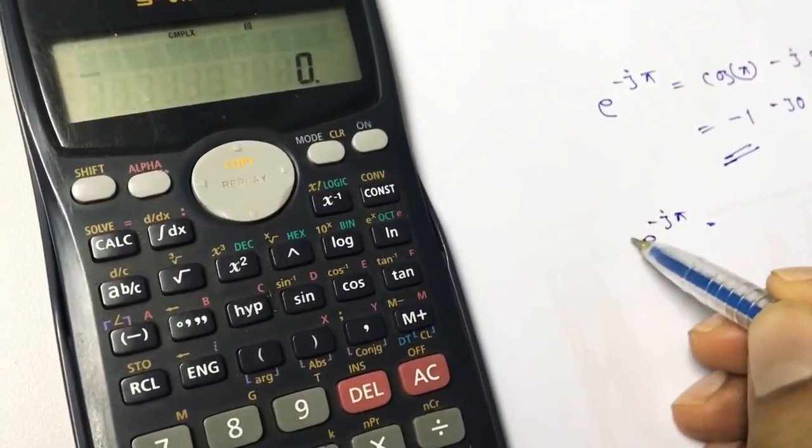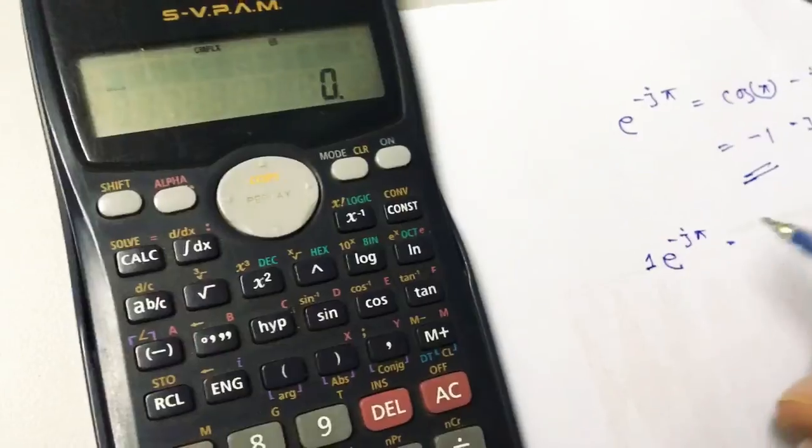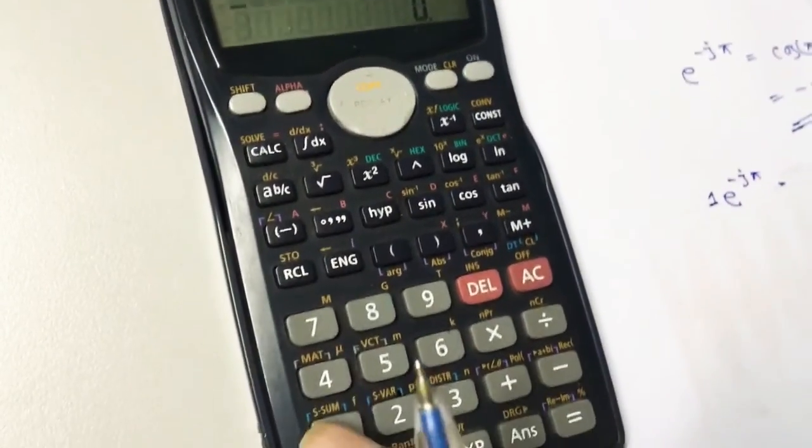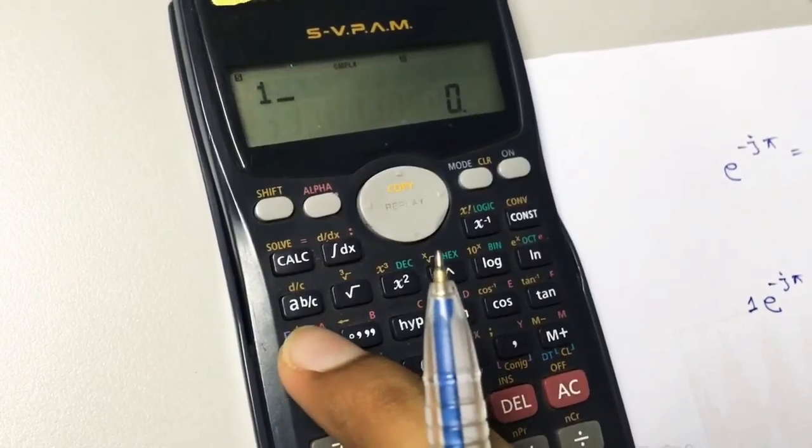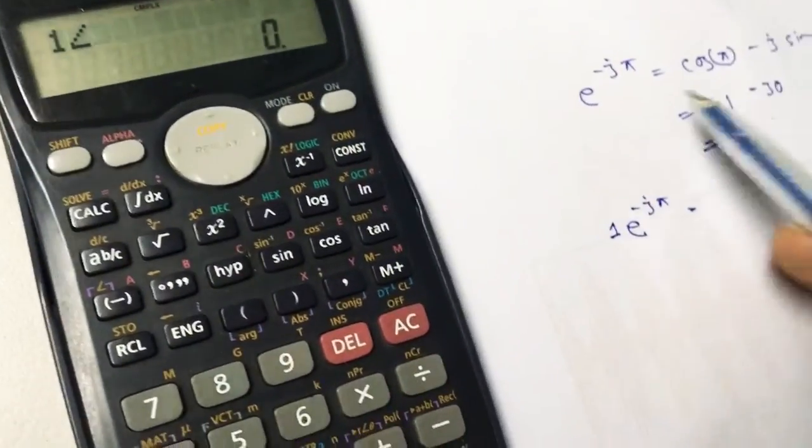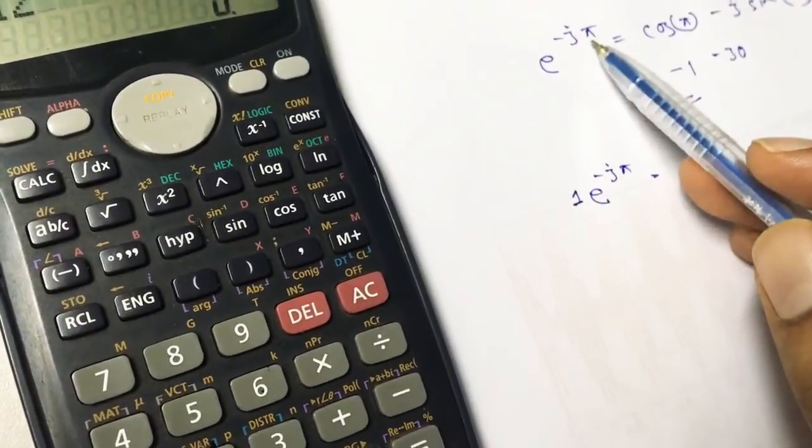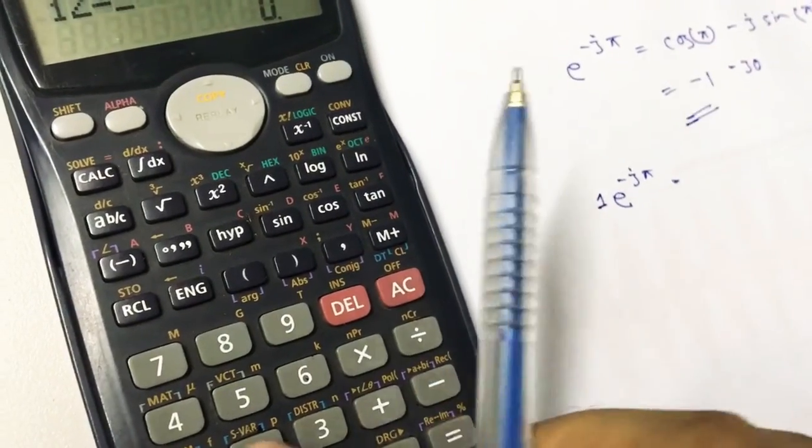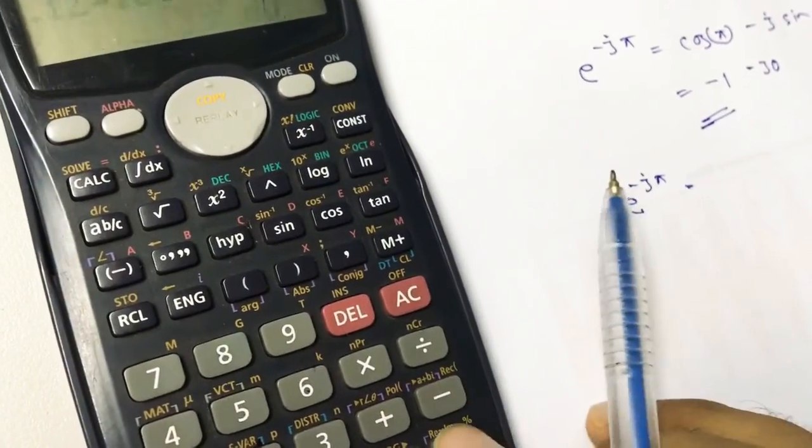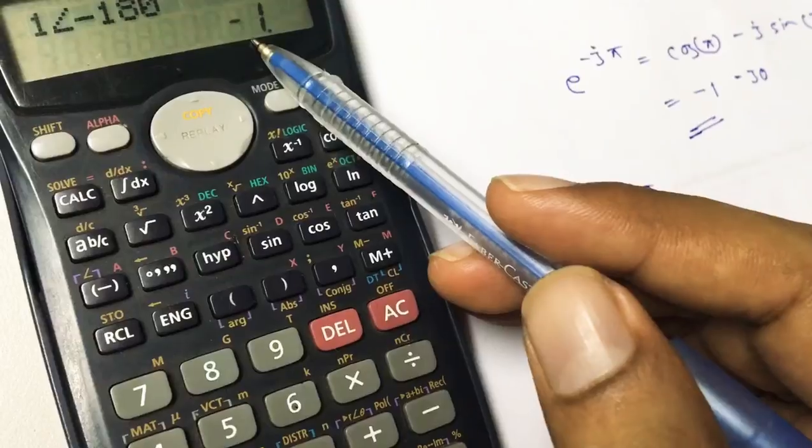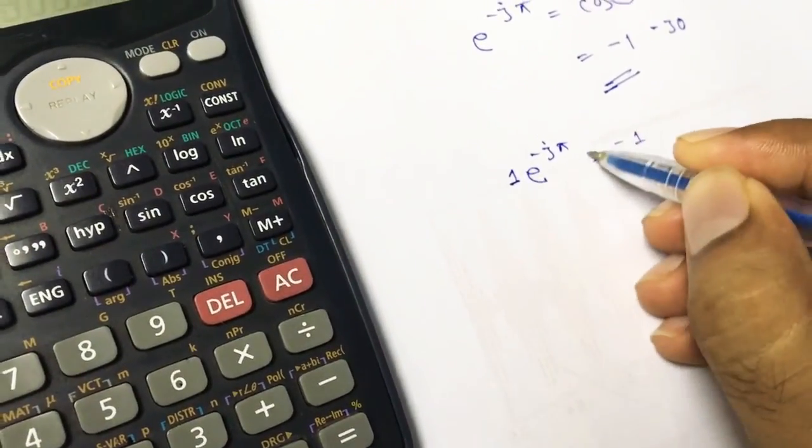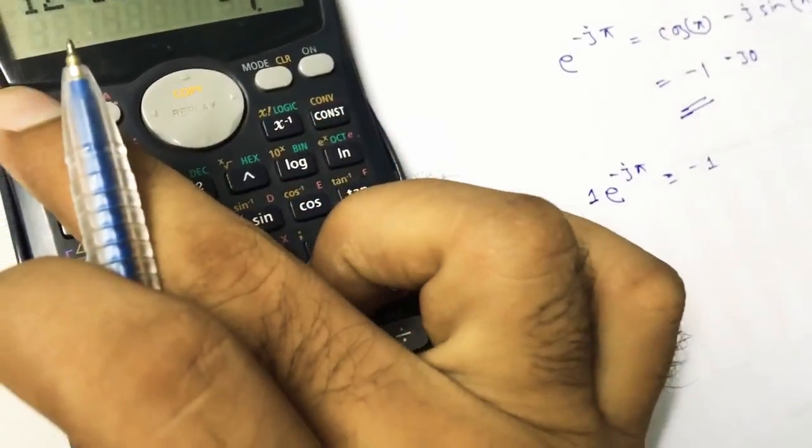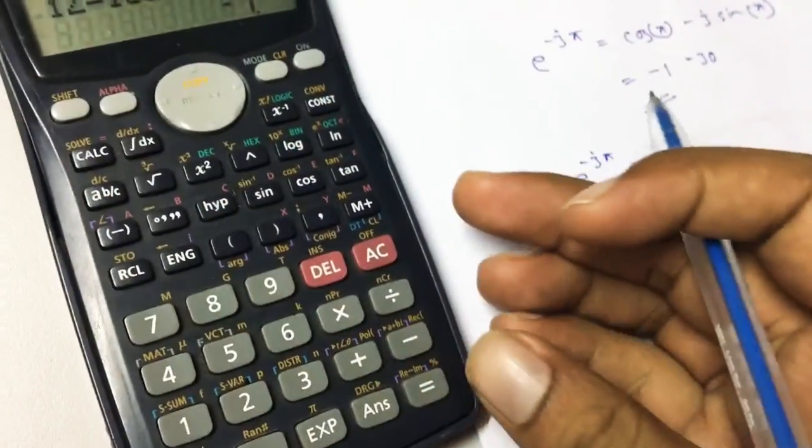We have the coefficient is one, so put that one here. Then go to shift and the angle. Our angle is minus 180, so minus 180. This is minus one. Then press shift and...